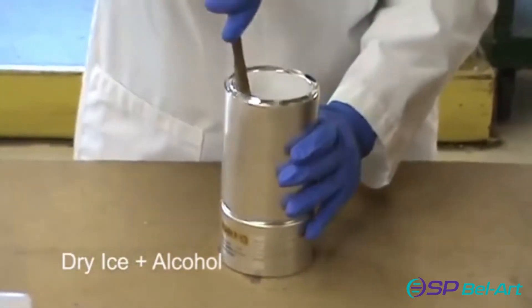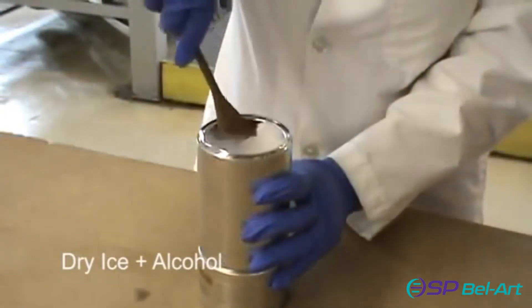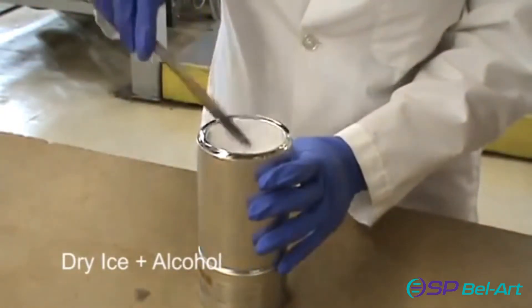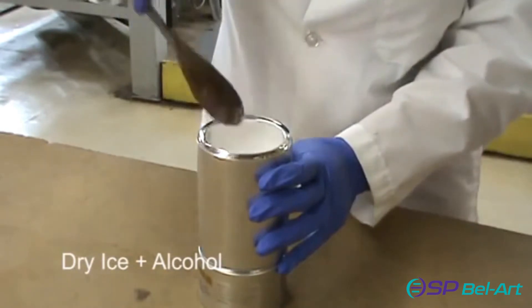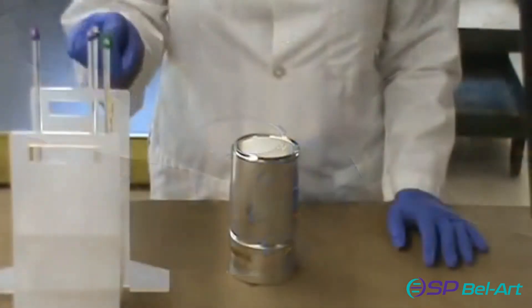If you do not have access to dry ice, you may also use a solution of shaved ice and salt. But please note, the solution can only be used for thermometers with ranges above freezing, as the solution will only reach temperatures slightly below freezing.